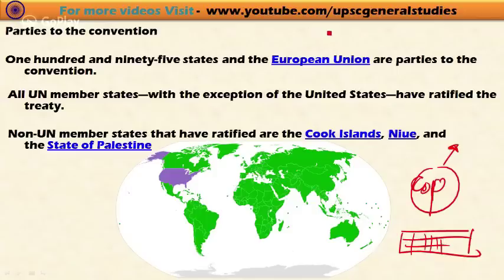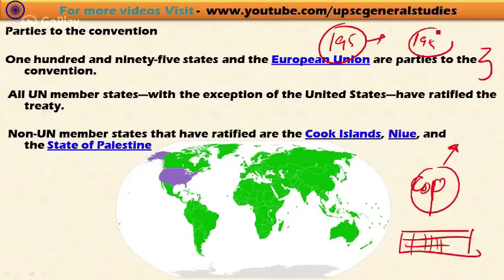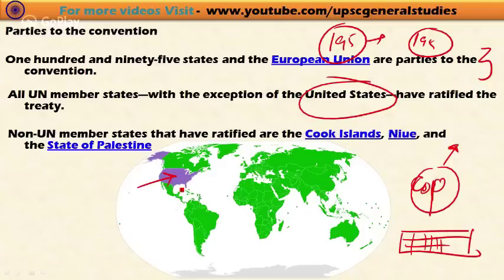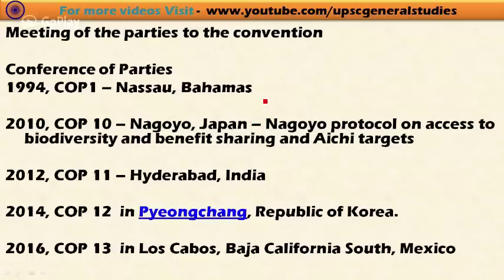In all, 195 countries along with European Union countries are parties to the convention. However, the United States has not ratified the Convention on Biological Diversity — it is the only major country that remains outside the convention. This is an important point to remember.